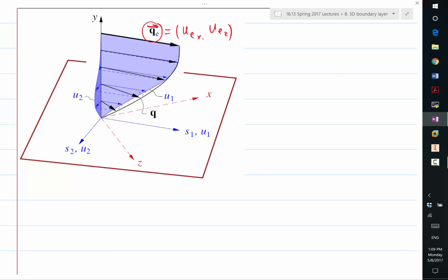So V component is considered separately in 3D boundary layers. That is a separate quantity, just like the V in our 2D boundary layer.